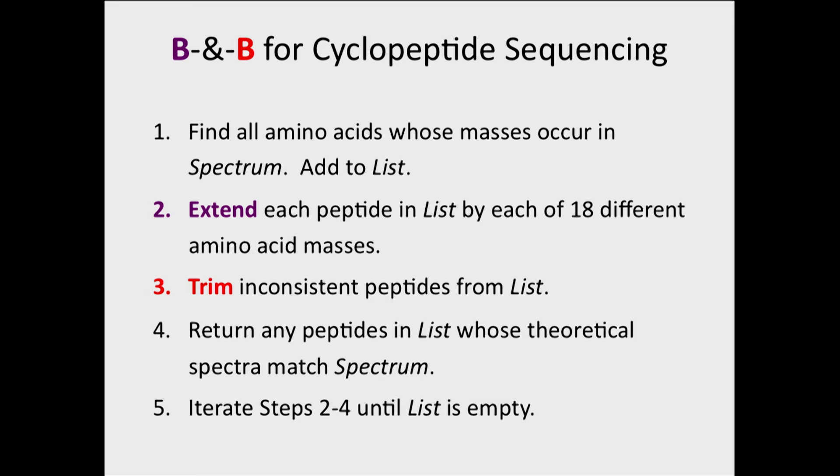I'll just summarize what it is. We find all the amino acids whose masses occur in the spectrum, and we add them to a list. Then we extend every peptide that's currently in the list in every possible direction. So we add each of 18 different amino acid masses onto the end of it, and then we have this trim step where we say, let's take which of these are inconsistent, and let's just get rid of them. Then we'll return any peptides whose theoretical spectra match the experimental spectrum that we're given.